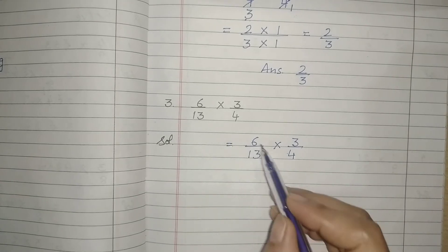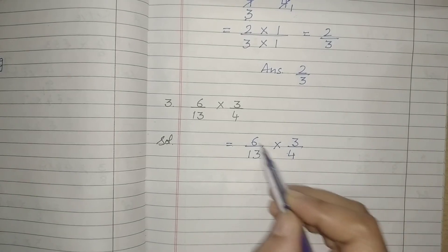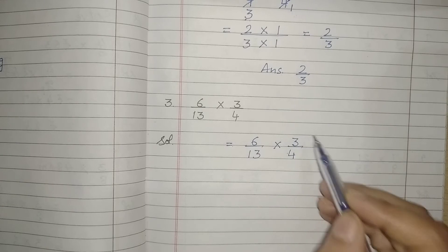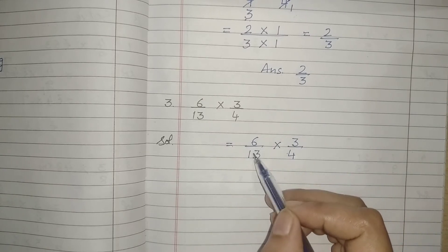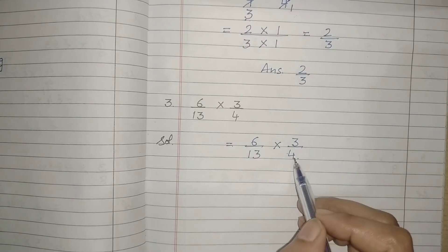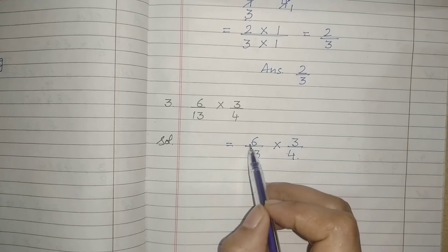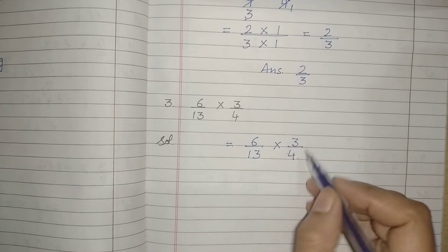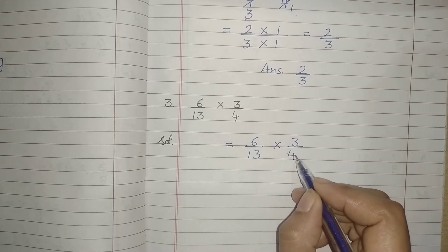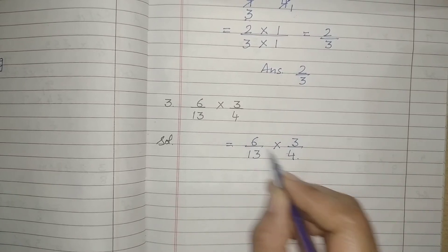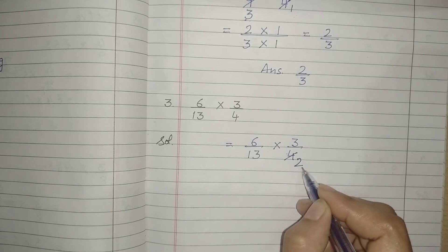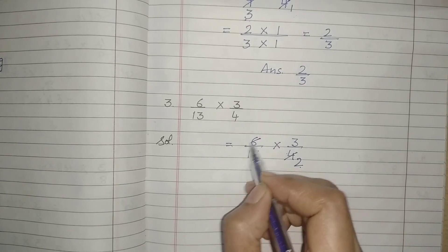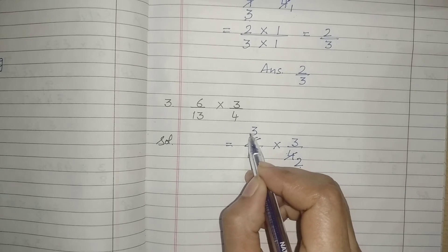Here we will do cancellation — either vertically or in cross. Vertically it's not possible here. In cross, yes — 4 comes in the table of 2, and 6 also comes in the table of 2. So we divide by 2: 2 twos are 4, and 2 threes are 6. Always remember we have to choose one common number that divides both numerator and denominator.